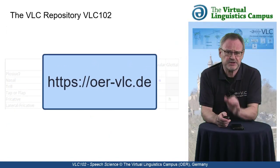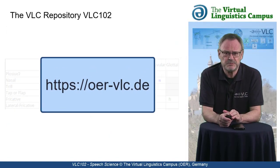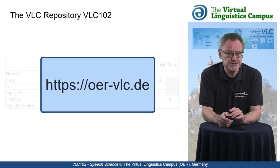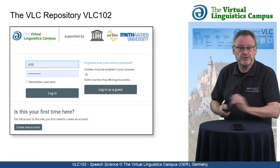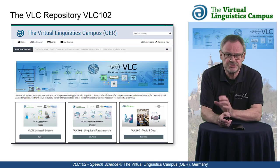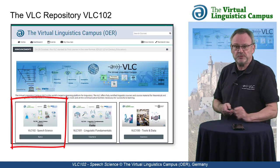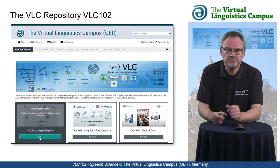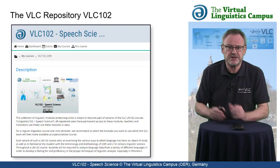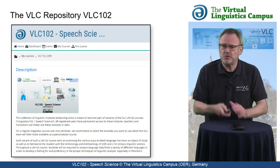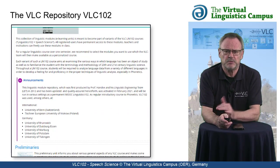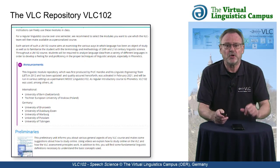If you have an account on the OER VLC website — which is of course free — accessing the repository is simple. Just log in with your personal data and you will find the repository on your personalized dashboard or in your course overview. A click on the VLC 102 tile leads you to the repository start site, where you have access to all modules, starting with a content description and a preliminary section with advice and help on how to use the units.